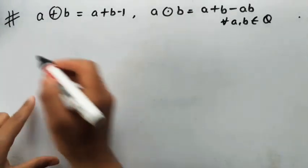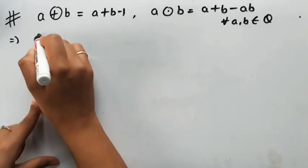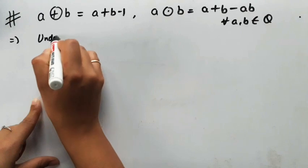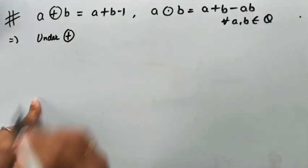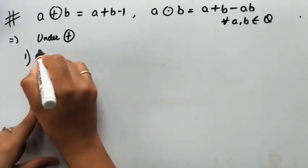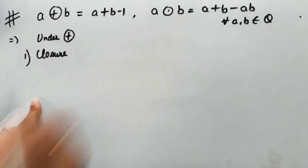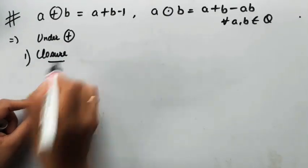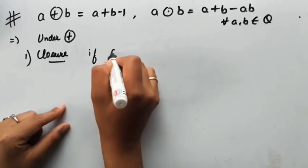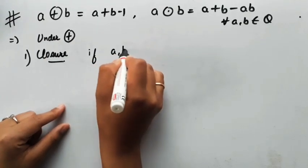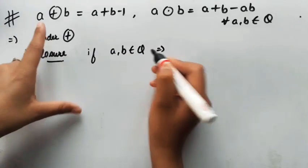Let's start with the properties under addition. The first property is the closure property. We need to show that if a, b belong to Q, then a⊕b also belongs to Q.